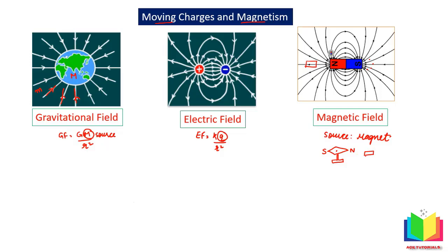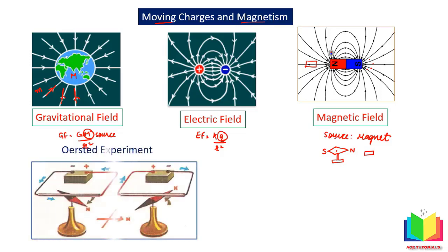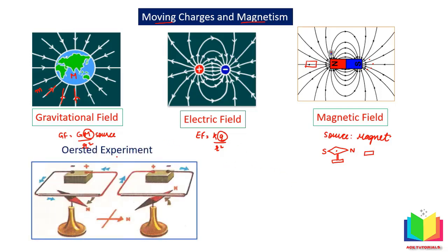Oersted is the name of a scientist who was doing experiments on electricity. By chance, while experimenting on the table, he had a compass needle placed nearby. He observed that when he closed the key, the compass needle showed deflection. When he opened the key, it aligned back in the normal north-south direction. He also observed that if the direction of current flow was reversed, the magnetic needle deflected in the opposite direction.